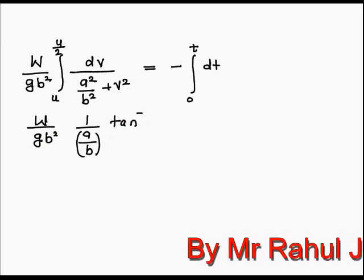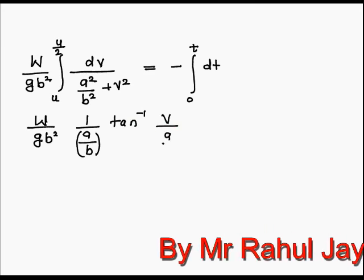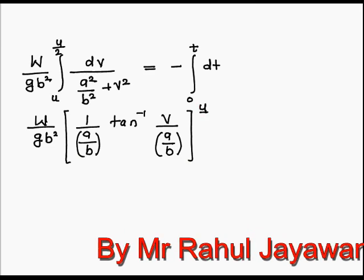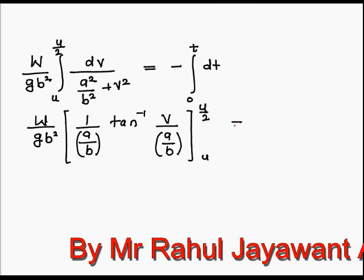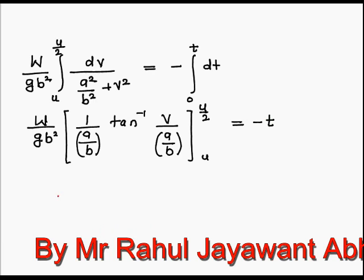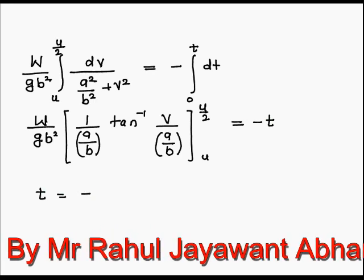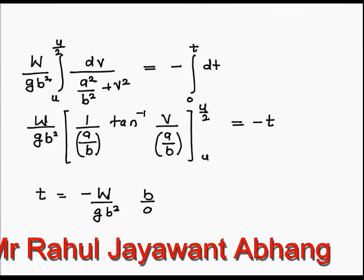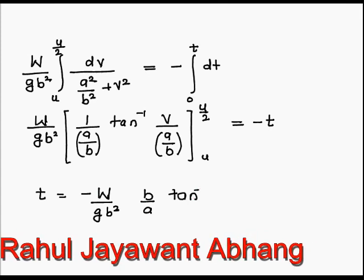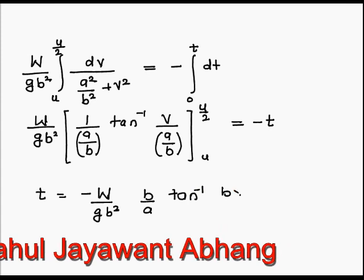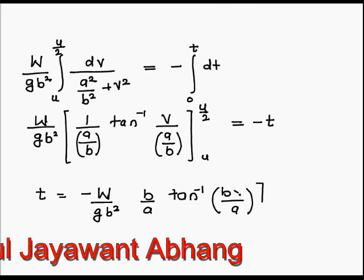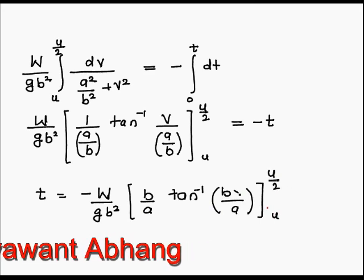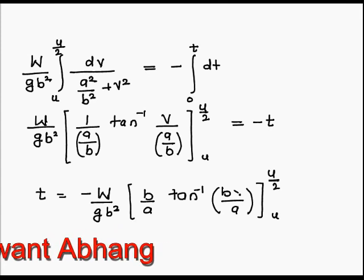Applying the formula: integration of dx upon a square plus x square equals 1 upon a tan inverse x upon a. Limits are u to u by 2. Integration of dt gives t with limit from 0 to t, therefore we get minus t. Multiplying both sides by minus, we get t equal to minus w upon gb square, times b by a tan inverse bv upon a, with limit from u to u by 2. Since b by a is constant with respect to v, we take it outside.